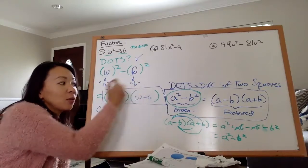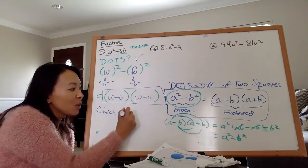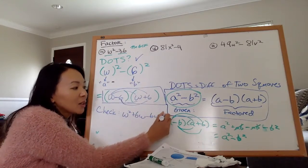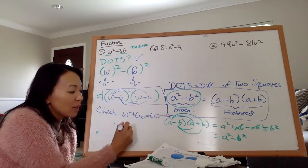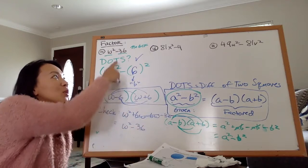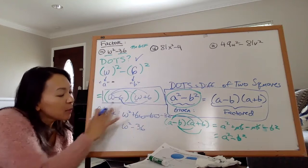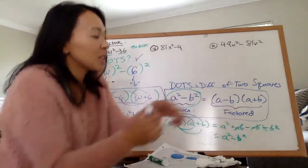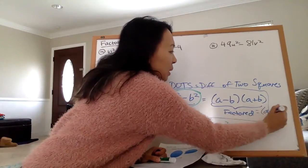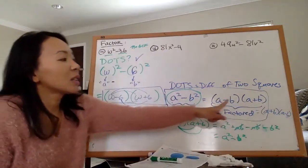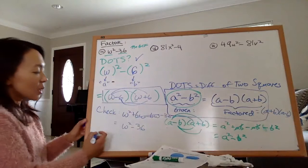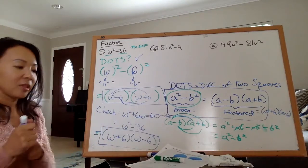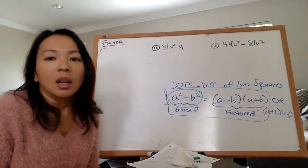I always recommend checking your work. If you FOIL (w − 6)(w + 6) you get w² + 6w − 6w − 36. The two middle terms cancel, and you end up with w² − 36 — which is what we started with. Also, the order doesn't matter: you can write (w − 6)(w + 6) or (w + 6)(w − 6). Both answers are acceptable.